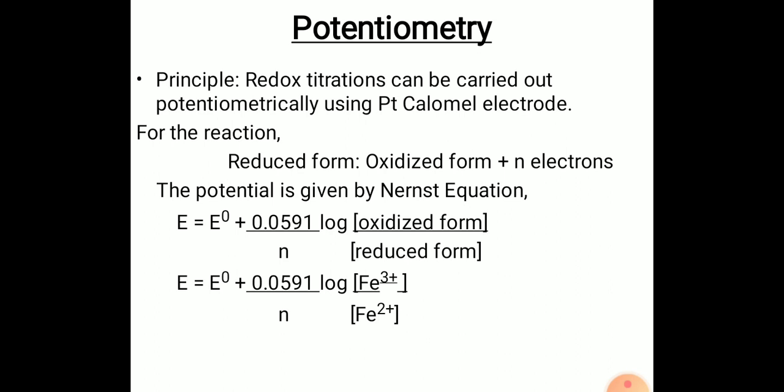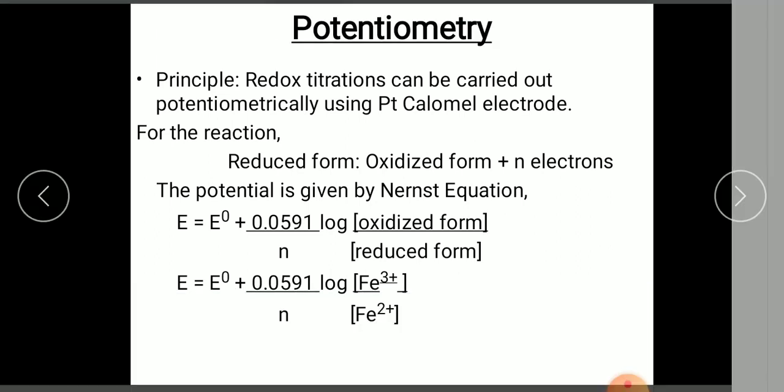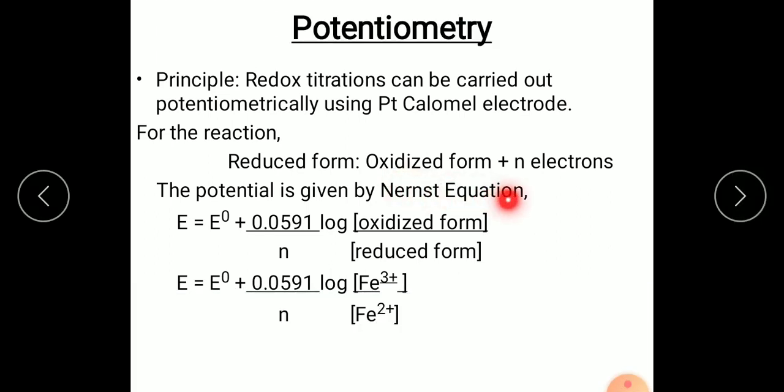This reaction is called a redox reaction. The potential is given by Nernst equation. The formula is E equals E naught plus 0.0591 divided by n log of oxidized form divided by reduced form. Here we are going to oxidize Fe plus 2 to Fe plus 3, so oxidized form is Fe plus 3 and reduced form is Fe plus 2. So this is the Nernst equation for this particular reaction. E naught is the standard electrode potential of the system.